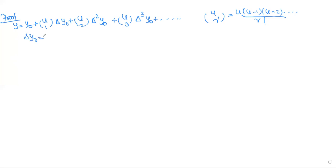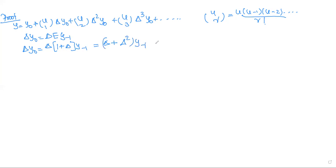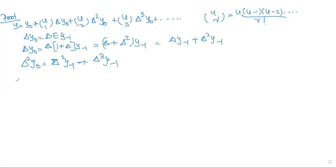To prove this, Δy0 can be written as Δ·E(y₋₁). Since E = 1 + Δ, we get Δy0 = (Δ + Δ²)y₋₁ = Δy₋₁ + Δ²y₋₁. Similarly, Δ²y0 = Δ²y₋₁ + Δ³y₋₁.